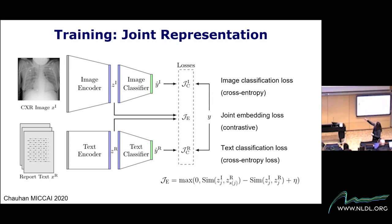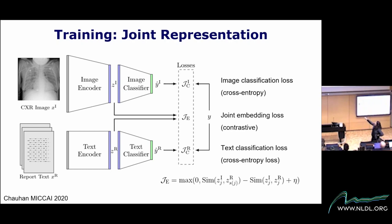The top stream is your classical image classification pipeline. I'm breaking the image classifier into an image encoder and image classifier. Think of Z_I as a latent representation taken from some intermediate layer of the network. X is the image, it goes through the image encoder, there is an intermediate representation, then a classifier giving the answer: none, mild, moderate, or severe. The loss is cross-entropy.